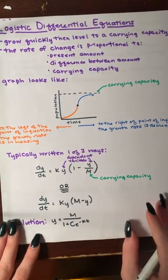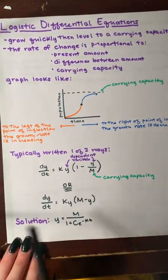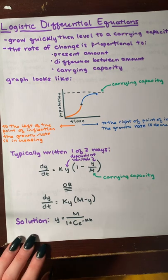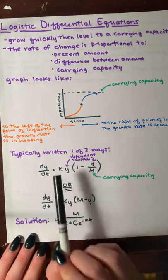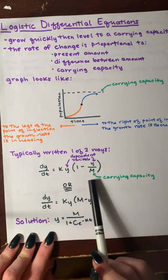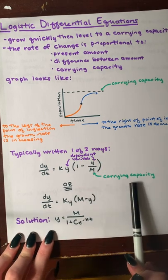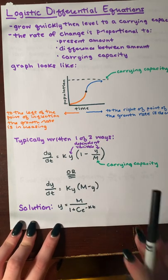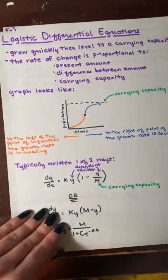Here are two ways that logistic differential equations are typically written. Right here the k is an unknown, the y is the dependent variable, and the m is the carrying capacity. It can also be written like this, and this is how the solution is written.